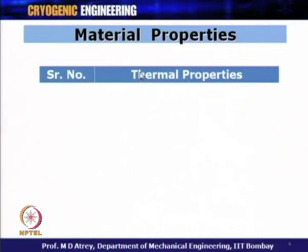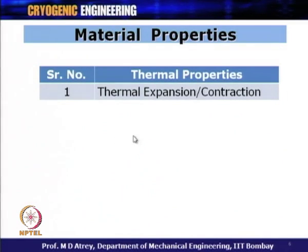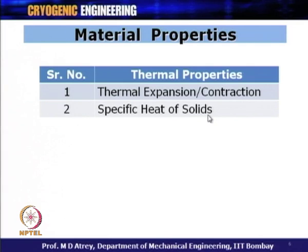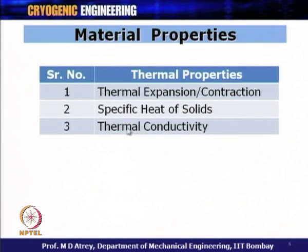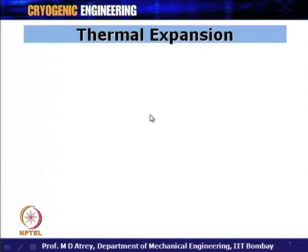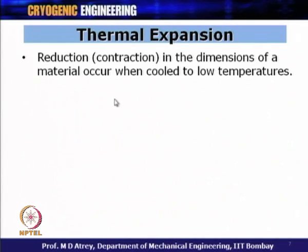Under thermal properties, we will discuss three properties: thermal expansion or contraction, specific heats of solids, and thermal conductivity. In cryogenics we encounter more contraction as temperature is reduced. Thermal expansion or contraction is the reduction in dimensions of a material occurring when cooled to low temperature. If subjected to very low temperatures, a material shrinks, and this must be considered in the design of a cryostat or cryogenic device.